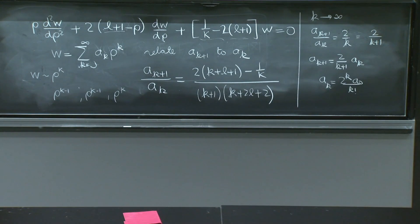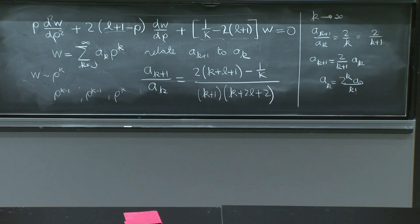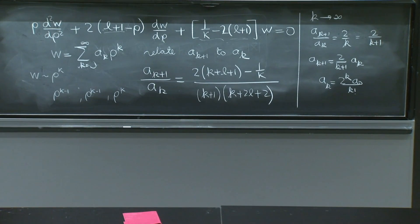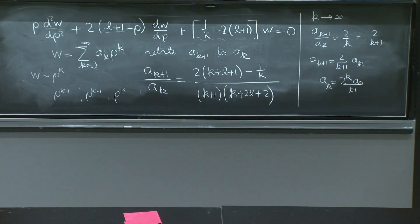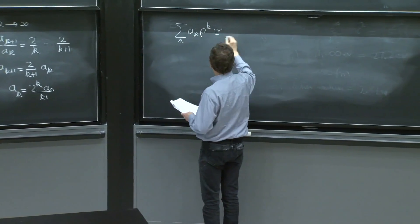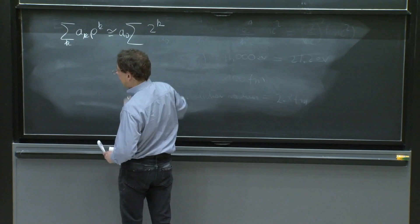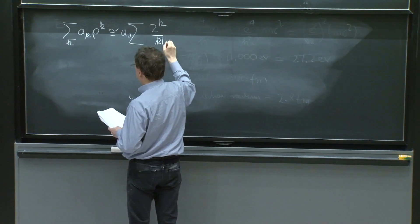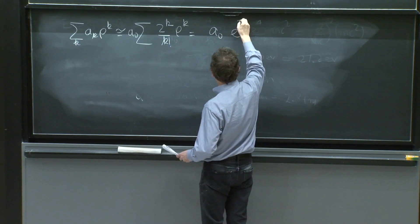So this is the material. With that, we can reconstruct what kind of function this series would be building if the series doesn't terminate. And it will not be too surprising. So in this case, the sum over k of ak rho k, which is the function we're building, is roughly equal to this ak here, which is 2 to the k a0. It can go out, k factorial, rho k. So this is a0, e to the 2 rho.